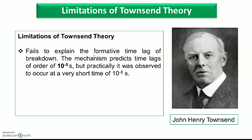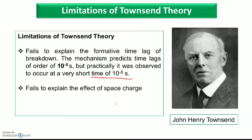The mechanism predicts a time lag of the order of 10 to the power of minus 5 seconds, whereas in practice the actual time lag is of the order of 10 to the power of minus 8 seconds. So there was a huge difference in the time lag predicted by Townsend's theory and the reality — that is, the time practically considered for breakdown. This was another significant problem in Townsend's theory.